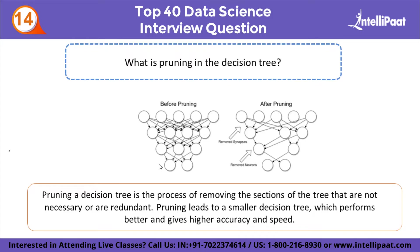What is pruning in a decision tree? Pruning reduces the size of a decision tree by removing parts of the tree that do not provide power to classify instances. Before pruning there are many unnecessary sections; after pruning those sections are removed. Pruning in a decision tree is the process of removing sections that are not necessary and redundant, so that the model performs better and gives higher accuracy.